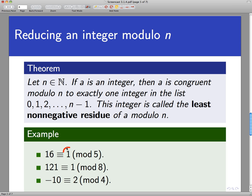Notice that each of these numbers that end up being the reduction of the numbers they started with are between 0 and the modulus. So 0, it's in this list, 0, 1, 2, 3, and 4.